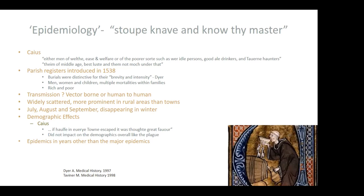The epidemics were more prominent in rural than urban areas and were essentially a summer disease — July, August, September — disappearing abruptly in winter. As for mortality, if half of every town escaped it was thought a great favour, though it did not impact overall demographics the way the plague had done. Historians looking at both parish registers and testamentary evidence have also found that there were smaller epidemics occurring between the five major epidemics.